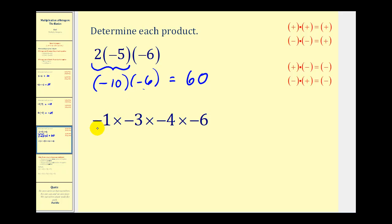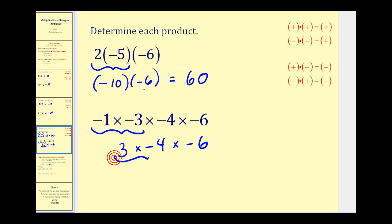Let's try another one. Here we have negative one times negative three. Well, a negative times a negative is positive, so this would be positive three times negative four times negative six. We'll keep working from left to right. Now we have positive three times negative four, which would be negative twelve times negative six.